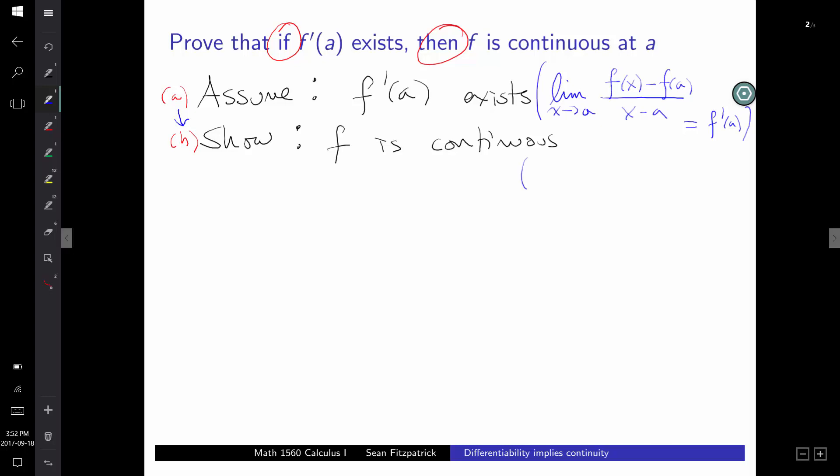We want to show that our function is continuous. What does it mean for a function to be continuous? Remember that this means that the limit as X approaches A of F of X has to equal F of A. So I get to assume the definition of the derivative. I get to assume that limit exists. And I need to establish this equation here.